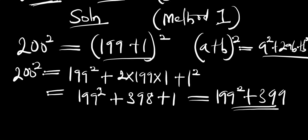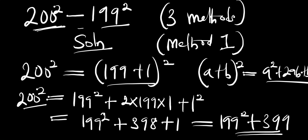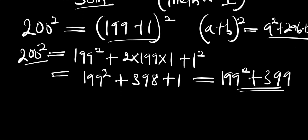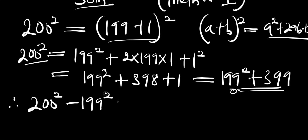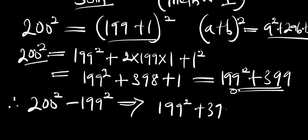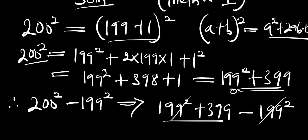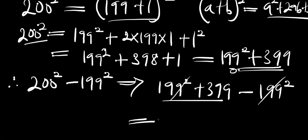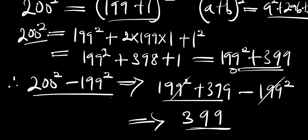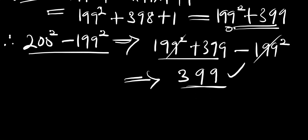So we have 199 squared plus 399, and this becomes the value for 200 squared. Now going back to our equation, 200 squared minus 199 squared — we substitute, and the 199 squared terms cancel. The final answer is simply 399. That is our first method.